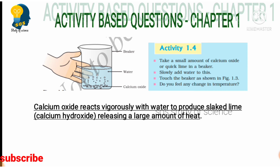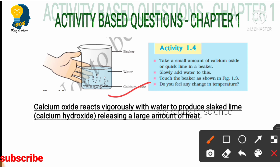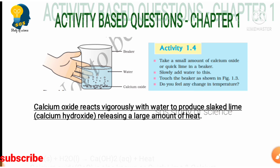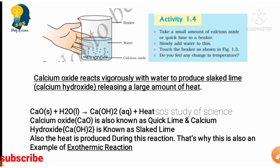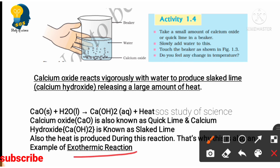Calcium oxide reacts vigorously with water to form slaked lime, which is calcium hydroxide (Ca(OH)₂). As this reaction takes place, a huge amount of heat is released, so we call it an exothermic reaction. The chemical equation is: CaO + H₂O → Ca(OH)₂ + heat. You should know that calcium oxide is called quicklime and calcium hydroxide is called slaked lime, and that this is an exothermic reaction.